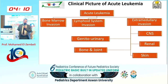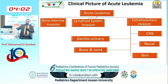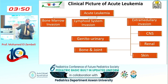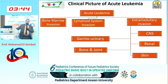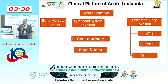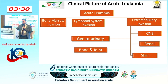Now let's discuss the clinical picture of acute leukemia. Bone marrow invasion presents as anemia — so the child comes with easy fatigability and pallor; thrombocytopenia — the child comes with bruises and orificial bleeding; neutropenia — the child comes with recurrent infections. Lymphoid system invasion causes hepatosplenomegaly and lymphadenopathy. Extra-medullary invasion: if it reaches the CNS, there will be persistent headache, blurring of vision, morning vomiting. If it reaches the kidney, renal chemistry abnormalities. If it reaches the skin, skin nodules. If it reaches bones or joints, persistent severe bone pain.